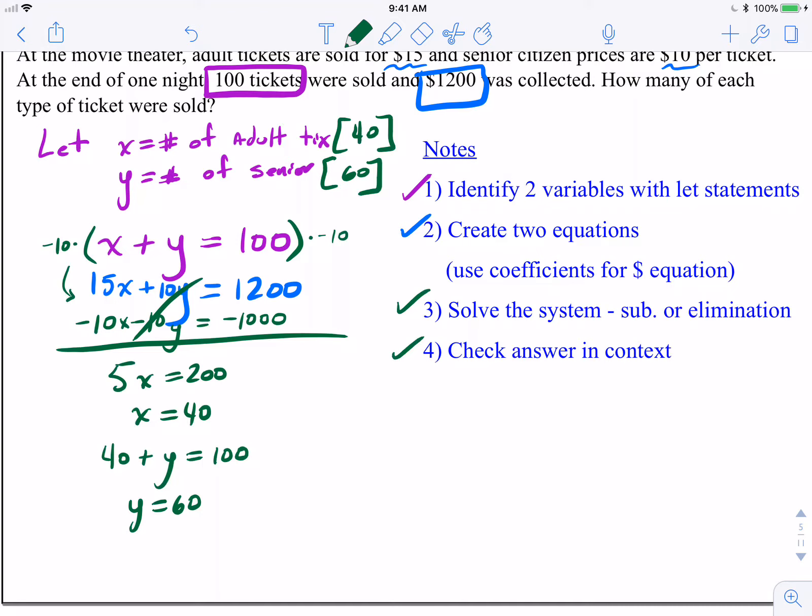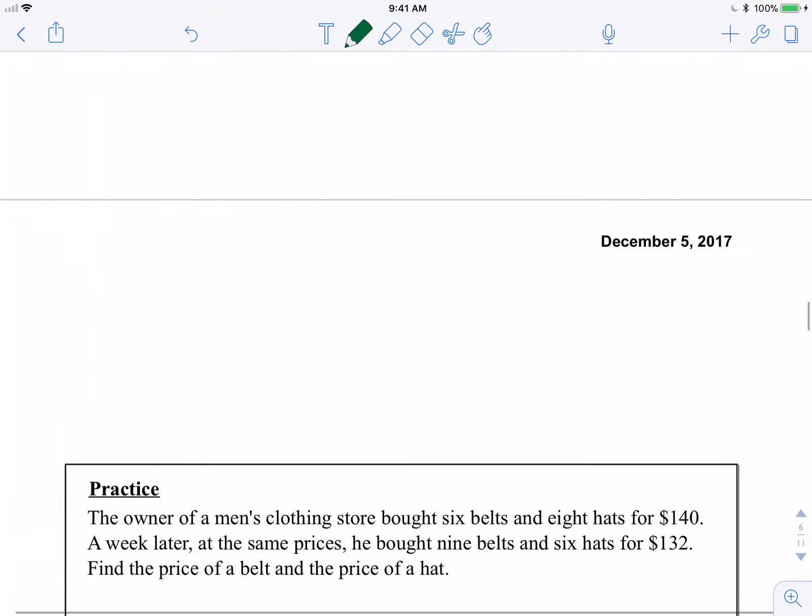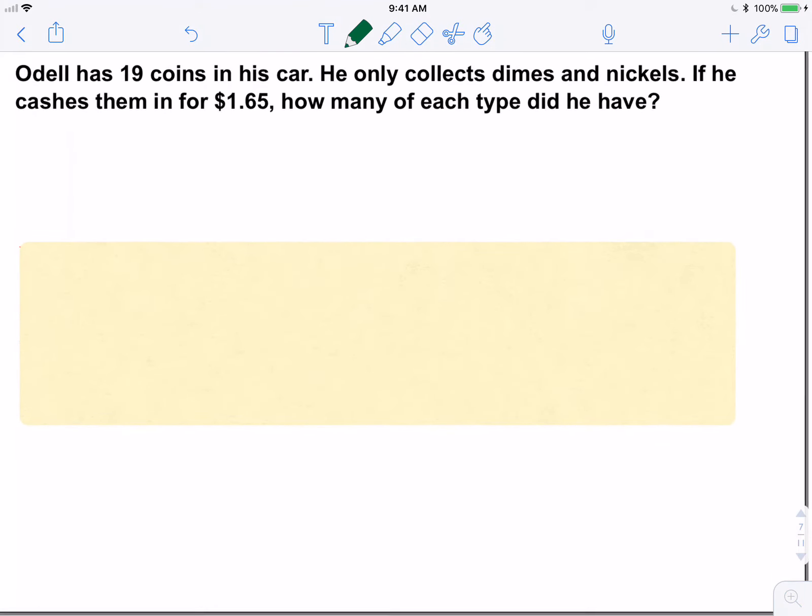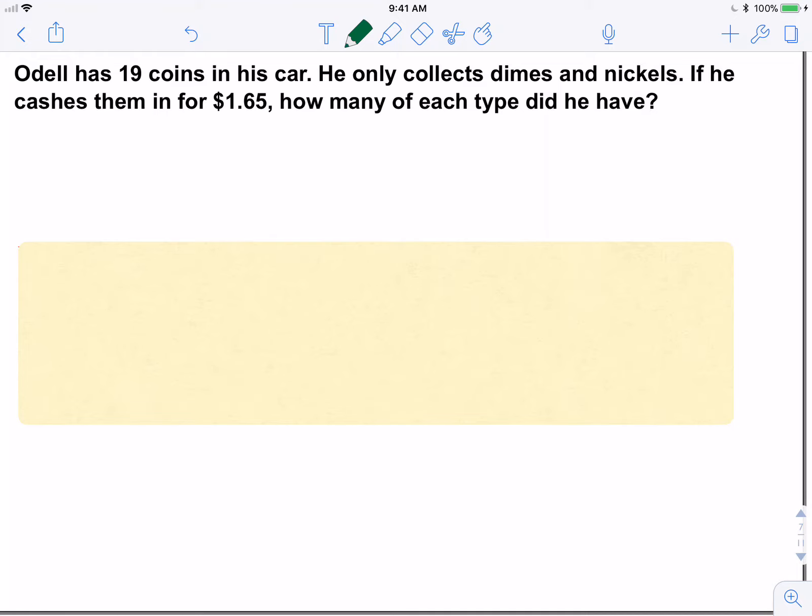And that's it. So I've gone through all the steps here. Again, writing your answer towards the top near the let's statements just helps you organize your answer a little bit. Sometimes you've got a lot of work going on towards the bottom of a problem. It can get kind of messy. All right. So we're going to take a quick look at one more example here. We're still going to deal with money. This one's going to be dealing with specifically coins. It says, Odell has 19 coins in his car. He only collects dimes and nickels. If he cashes them in for $1.65, how many of each type did he have?